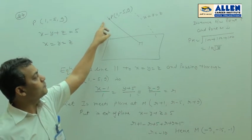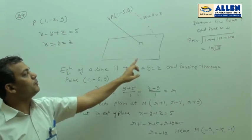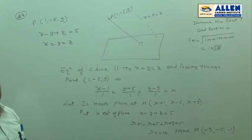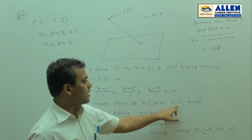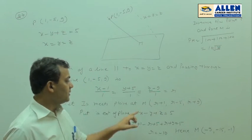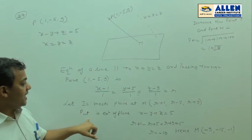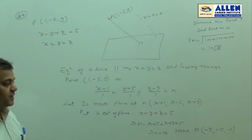Now, let this line which is passing through point P, meeting the given plane x minus y plus z equal to 5, at point M. And let coordinates of M are (R plus 1, R minus 5, R plus 9).